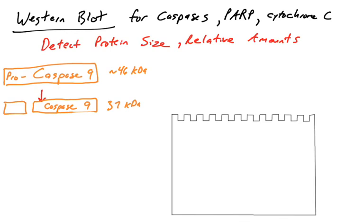Caspase 9, for example, in its pro full-length form is about 46 kilodaltons. If caspase 9 is cleaved by the apoptosome, it will become activated — and that happens in the intrinsic pathway of apoptosis induction. Caspase 9 goes from its pro form to its active form, which is about 37 kilodaltons. So caspase 9 is cleaved by the apoptosome when apoptosis is occurring via the intrinsic pathway.